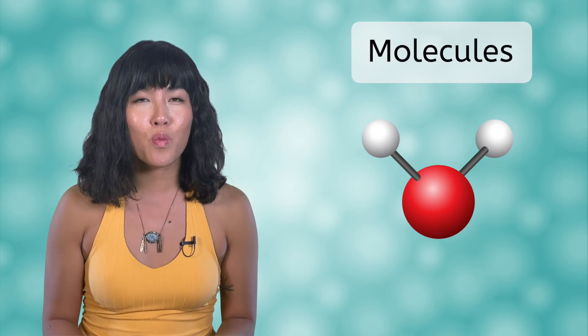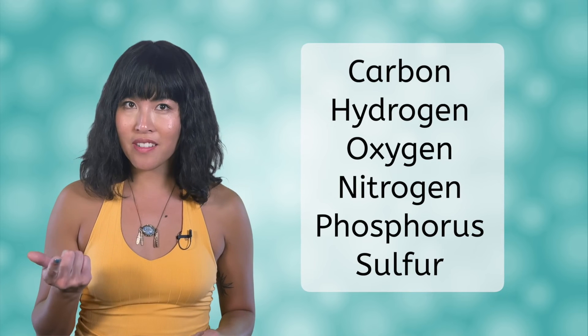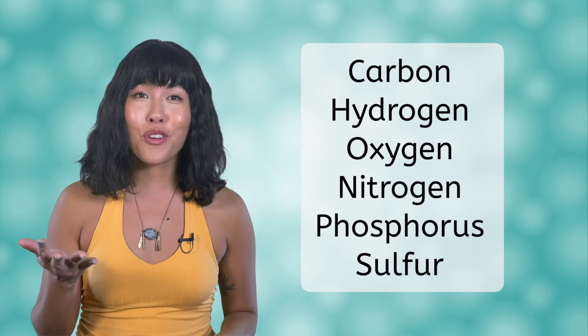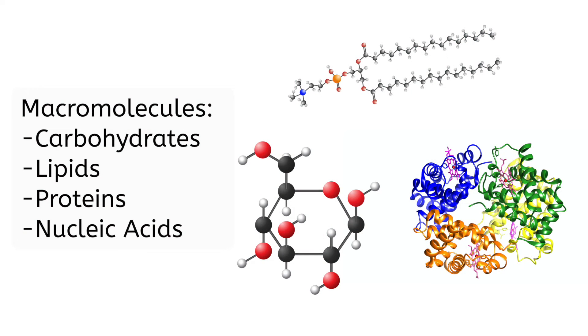We've talked about the different parts of a prokaryotic cell and looked at lots of examples. But what is a prokaryotic cell made of? Every piece of matter is made of atoms — and molecules, which are multiple atoms bonded together. The most common elements in cells are carbon, hydrogen, oxygen, nitrogen, phosphorus, and sulfur. The specific macromolecules made from those elements are carbohydrates, lipids, proteins, and nucleic acids. Those are the molecules that make up prokaryotic cells, or any cells for that matter.